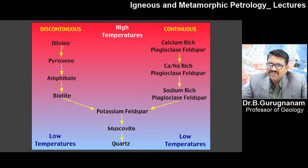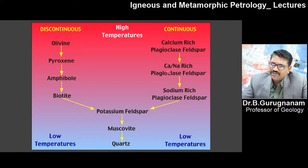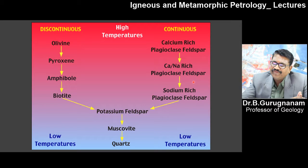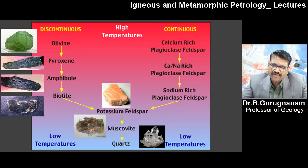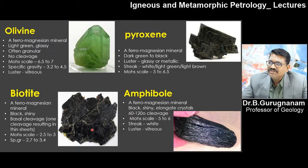At the discontinuous end, olivine forms, and at the continuous end, calcium-rich plagioclase feldspar forms. As temperature reduces, pyroxene forms on the discontinuous side, and calcium-rich plagioclase continues on the other. Then amphibole forms, followed by biotite with sodium-rich plagioclase. From calcium-rich to sodium end member — anorthite to albite of the plagioclase feldspar series forms continuously on one side. Whatever remains gives potassium feldspar and muscovite, and then at low temperature you get quartz. All geologists must keep in mind how different minerals occur at different temperature and pressure conditions.